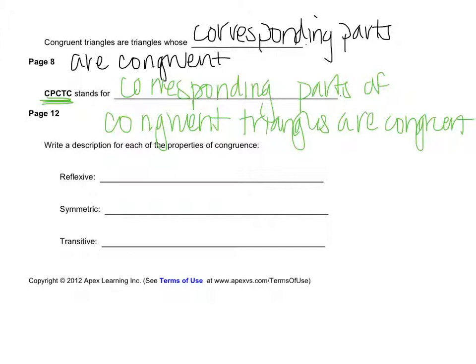There are three congruence properties, and they are reflexive, symmetric, and transitive. The reflexive property says that triangle ABC is congruent to triangle ABC — every triangle is congruent to itself. That really makes a lot of sense if you think about it.